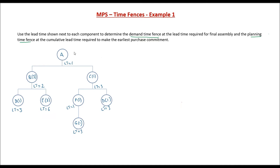This is a BOM given to us. A is the end item and you have multiple sub-assemblies and then you have the final components which are to be procured. Based on this and the lead time that has been given to us, we have been given certain conditions to find out the demand time fence and the planning time fence.